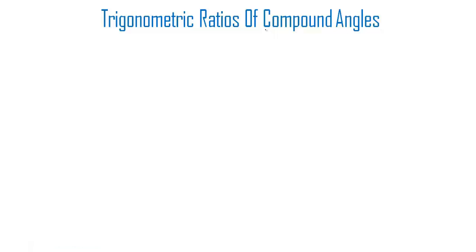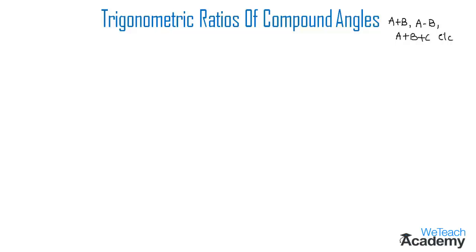First let me revise what is a compound angle. A compound angle is nothing but the algebraic sum or difference of two or more angles. For example, if A, B, C are three angles, then A plus B, A minus B, A plus B plus C, etc. are said to be compound angles. In this section, we are going to deal with the formulas of Trigonometric Ratios of Compound Angles.